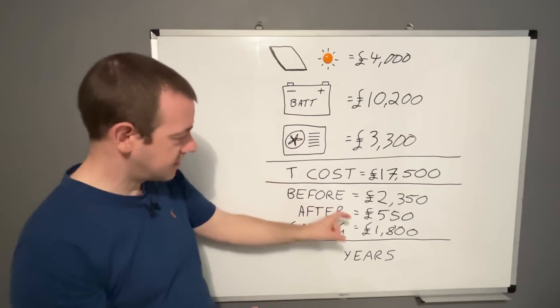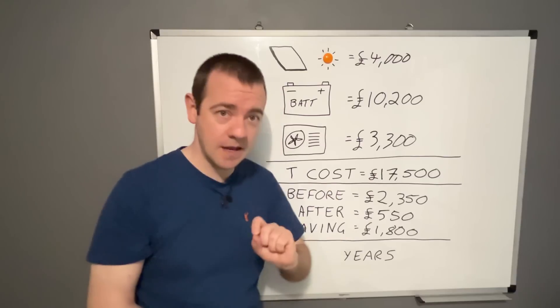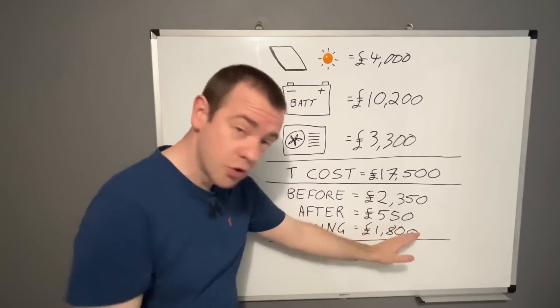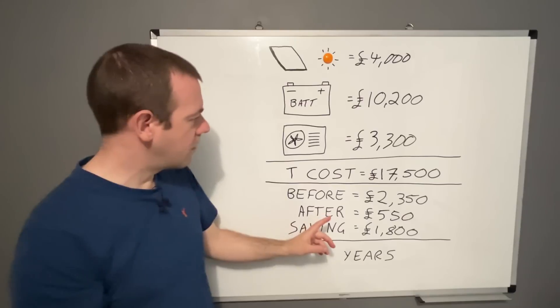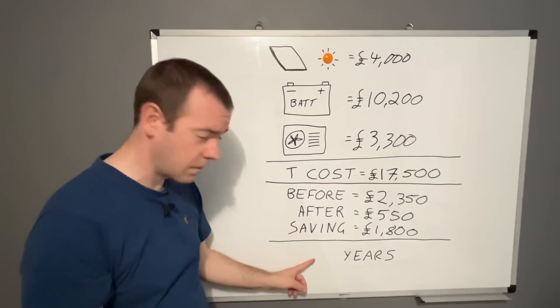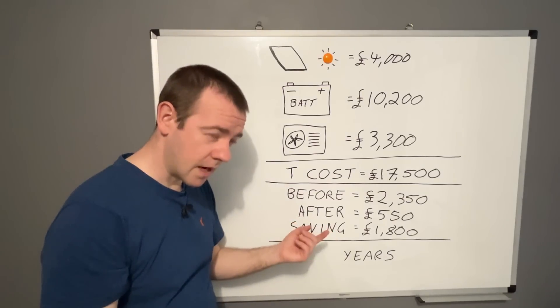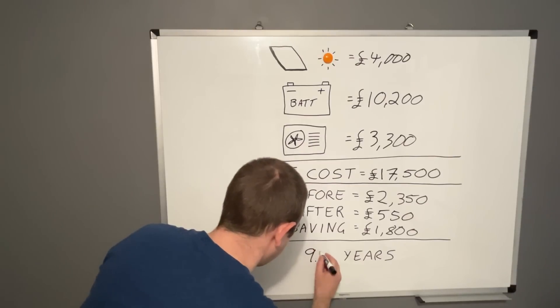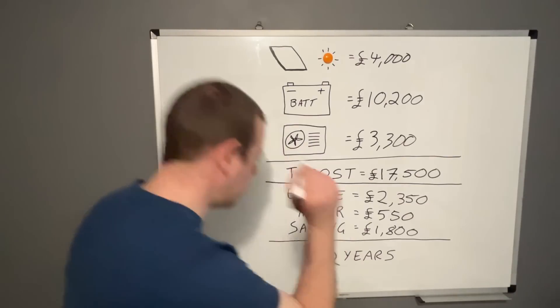But let's assume it does stay the same. Then what we need to do is £17,500 divided by that, which gives us, pretend I'm figuring it out in my head, 9.72 years.